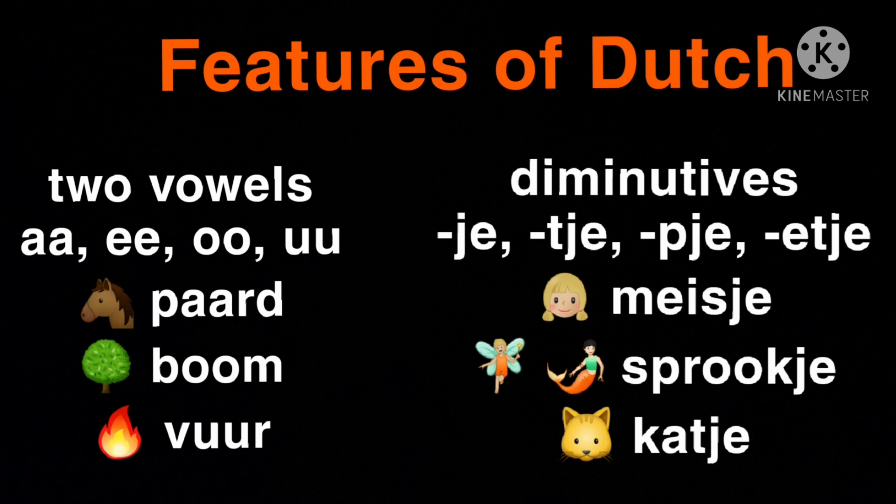The last feature I chose are diminutives, or in Dutch, verkleinwoorden. Girl means meisje, and the fairy tale is a sprookje.